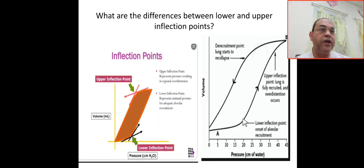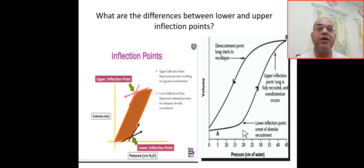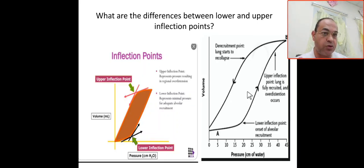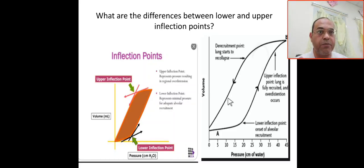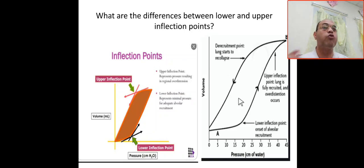This is the pressure-volume loop. Pressure is on the x-axis and volume on the y-axis. This curve shows inspiration closing with expiration. In between, we have compliance, inspiratory resistance, and expiratory resistance.